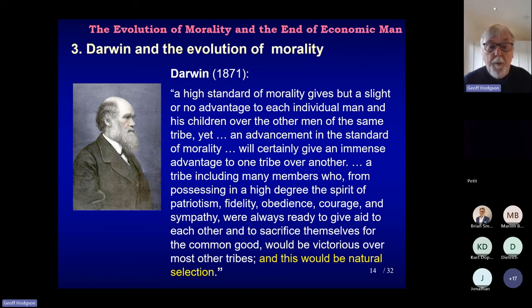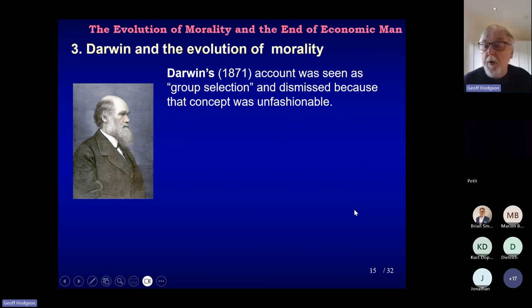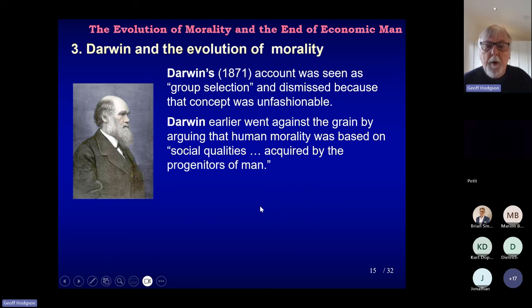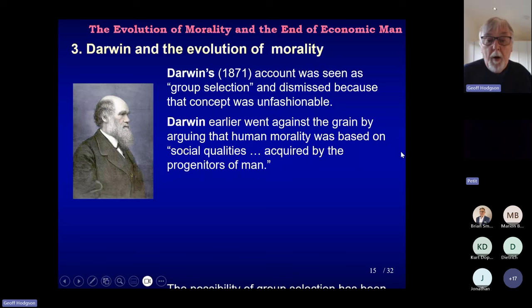This was seen as group selection and dismissed, and also seen as unfashionable. Darwin also went against the grain by arguing that humanity was based on social qualities acquired by the progress of man. What I mean by against the grain is that — not so much amongst evolutionary thinkers in the 19th century, but amongst others — there was very much an assertion of human superiority over others, lower races, lower animals and so on. Darwin was actually stressing connection, continuity, and evolutionary processes between them.